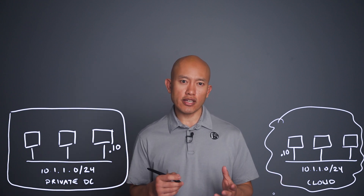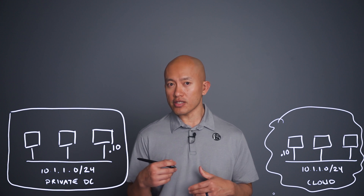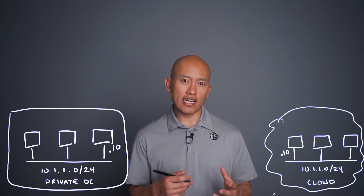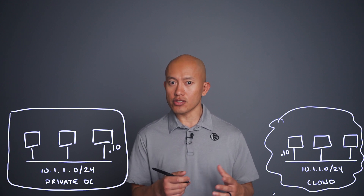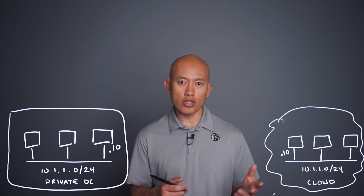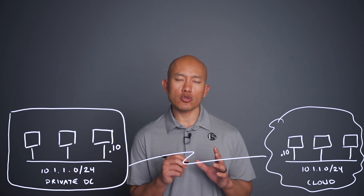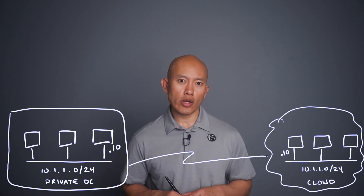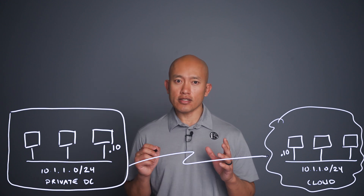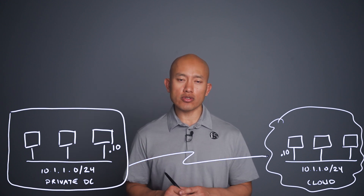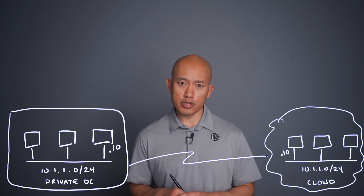Actually, more common would be using 10.1.0.0/16, because sometimes cloud providers will insert that as a default subnet. And of course, they have a server in the cloud environment using an IP of 10.1.1.10. So when you go to establish connectivity between the private data center and the newly acquired cloud environment, there's going to be a conflict. These IP ranges clearly overlap, and these servers specifically have the same IP addresses as well.